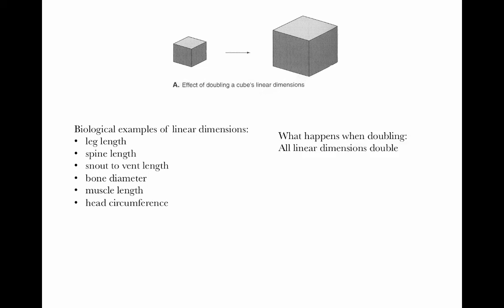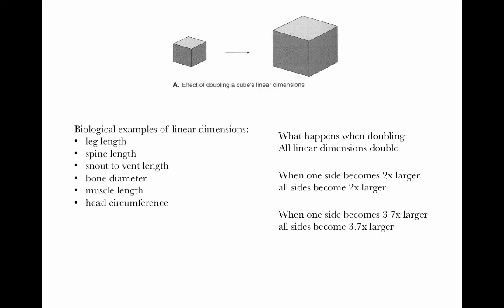With our cube, let's see what happens when doubling all linear dimensions. When one side becomes two times longer, all of the sides become two times longer, so we just have a larger cube — there's no change in shape involved. If one side became 3.7 times larger, all of the sides would also become 3.7 times larger.